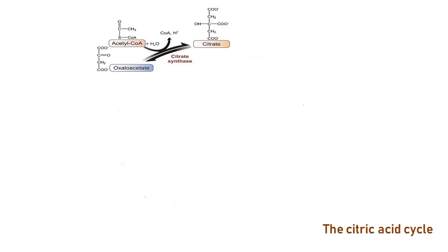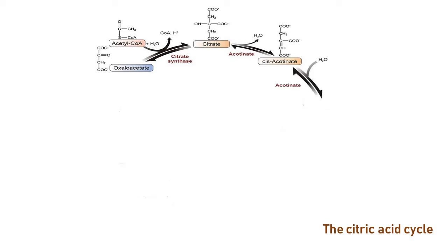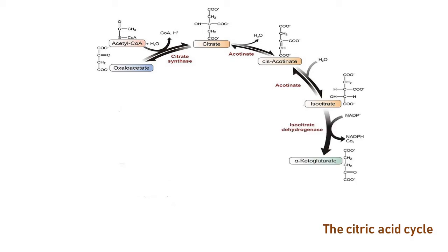Then, in succession of reactions, citrate is rearranged to form isocitrate. Isocitrate loses a molecule of carbon dioxide and undergoes oxidation to form alpha-ketoglutarate. Alpha-ketoglutarate loses a molecule of carbon dioxide and is oxidized to form succinyl coenzyme A.